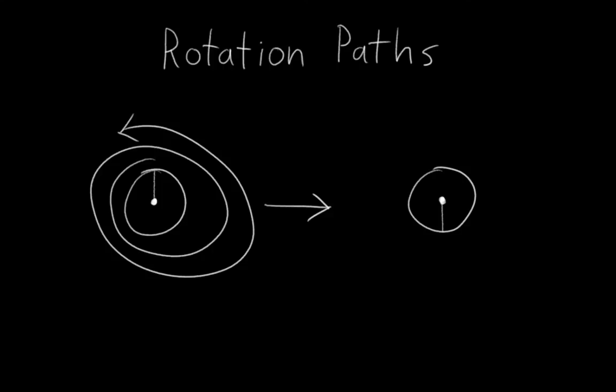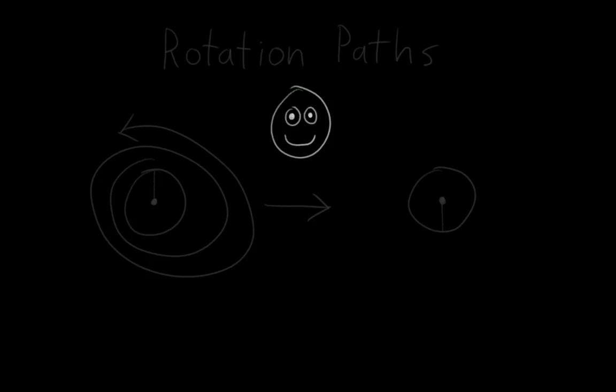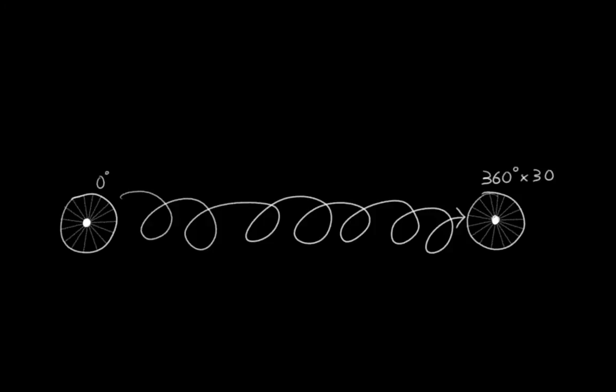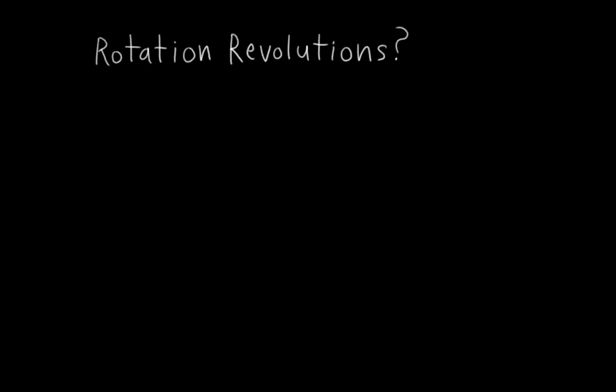Rotation paths are important information. For example, if we have two objects connected to each other, like a head is connected to a body with a neck. If the head spins around one time, it's going to have a very different effect than if it spins around 20 times. It can also be useful for animating wheels where we can tell the computer that it starts unrotated, and 100 frames later has spun clockwise 30 times. But why am I calling this a rotation path? All I'm really talking about is preserving the number of revolutions of a rotation, right? Couldn't I just call it rotation revolutions or rotation spin count or something like that?